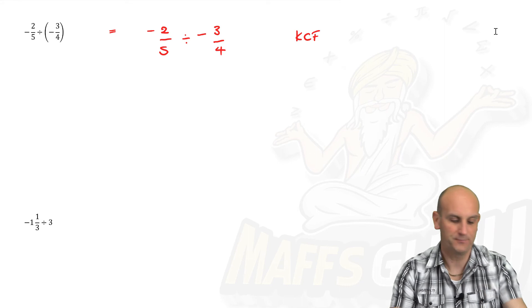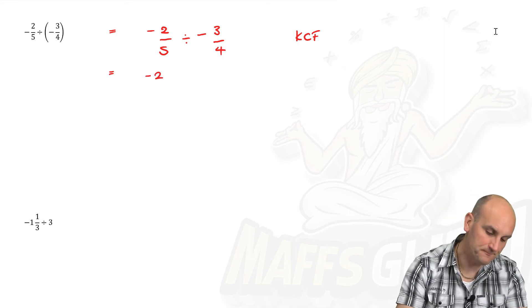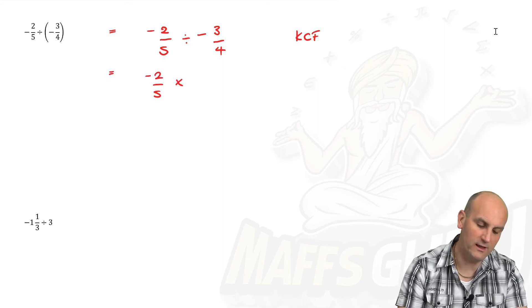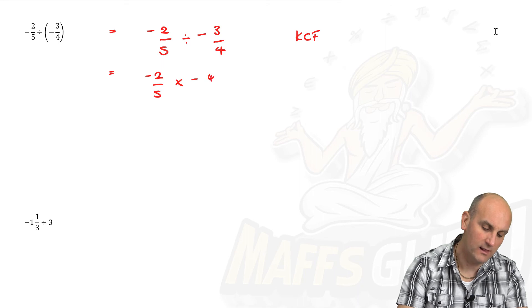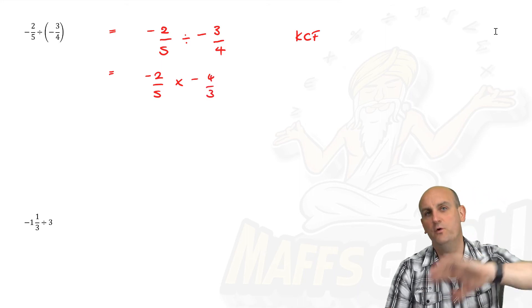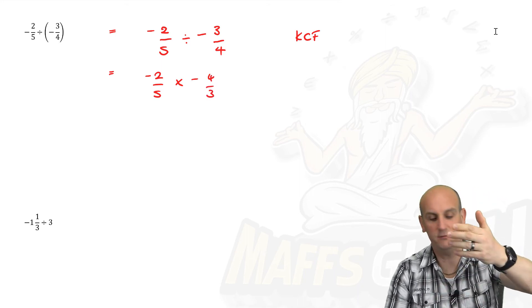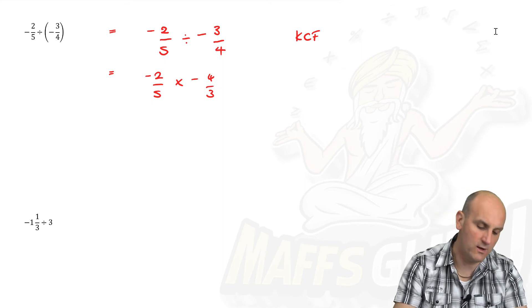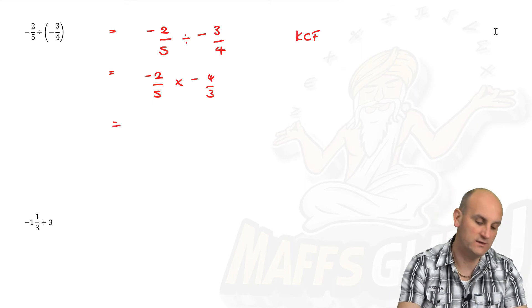So I'm going to keep that first fraction the same. I'm going to change that to times. And then I'm going to flip that over. All right. So the four was on the bottom, it goes on the top. And the three was on the top, it goes on the bottom. And now I've got a multiplication. So life is good. I don't have to worry about anything other than doing the multiplication.